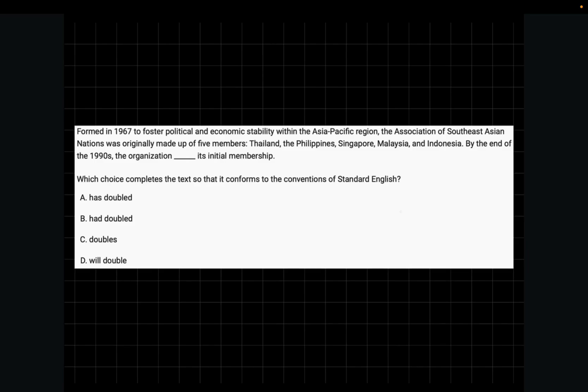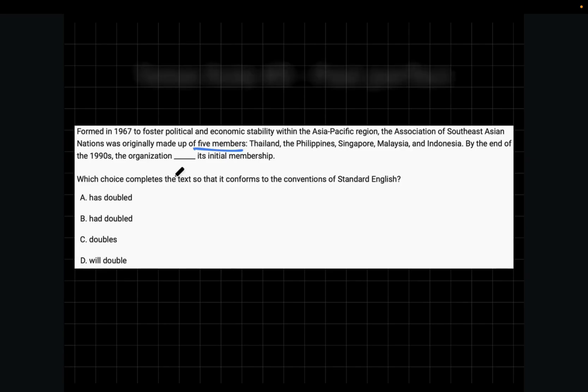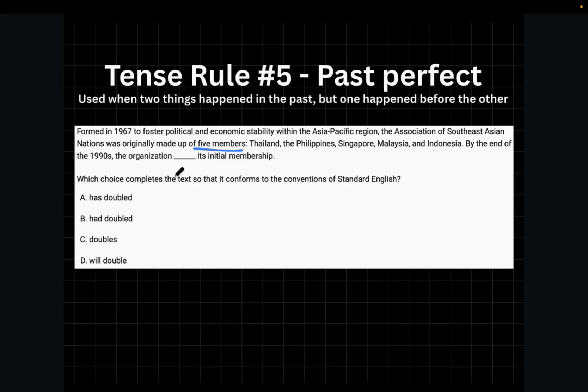Formed in 1967 to foster political and economic stability within the Asia-Pacific region, the Association of Southwest Asian Nations was originally made up of five members: Thailand, the Philippines, Singapore, Malaysia, and Indonesia. By the end of the 1990s, the organization blanked its initial membership. So first, it was made up of five members, and then the number of members doubled. So whenever you see two things happen in the past, but one happened before the other, you'll use tense rule number five, which is past perfect.